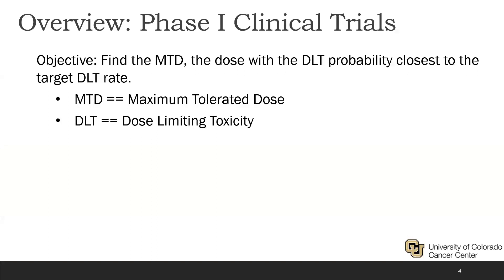As a reminder, the goal of Phase I clinical trials is to find the MTD, or maximum tolerated dose. This is defined as the dose with the DLT, or dose-limiting toxicity, probability that is closest to the target DLT rate.